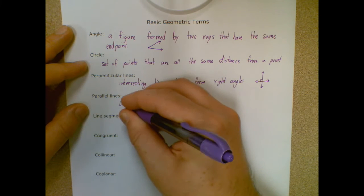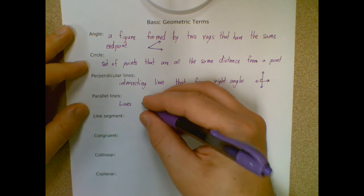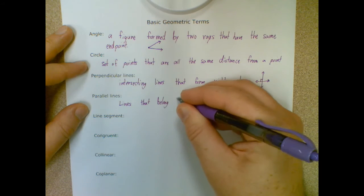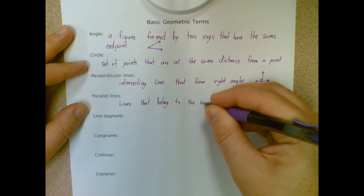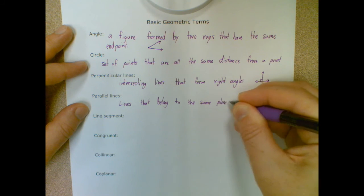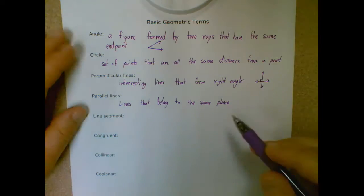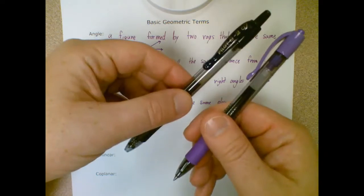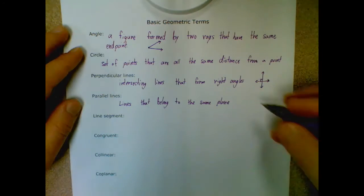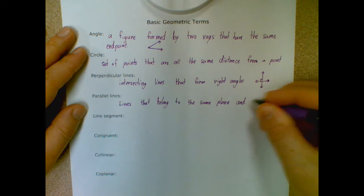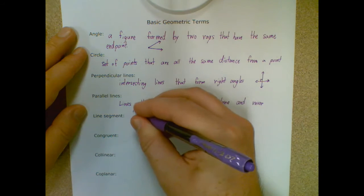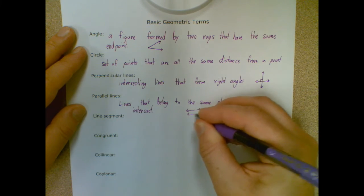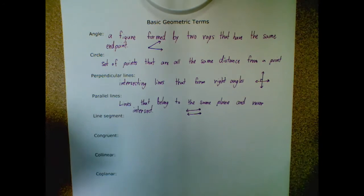Parallel lines are lines that — and this first part seems a little weird — belong to the same plane, so that just means they're two-dimensional. Imagine them on the same sheet of paper. You don't have one going like this and the other one tilted like that; they're both going to be on the same plane, the same flat surface, and they never intersect. You'll get lines that look like this, traveling the same distance, and they're going to never actually run into each other.